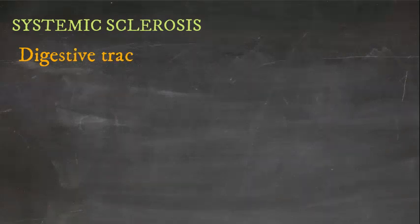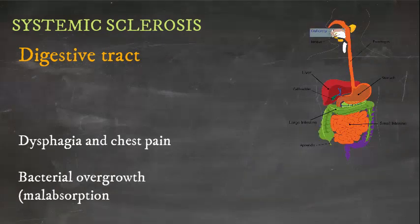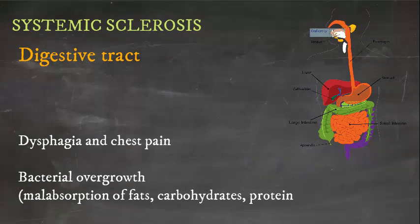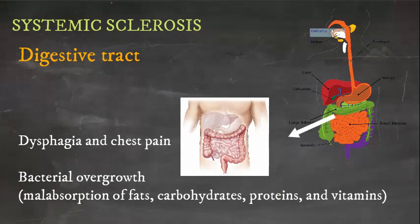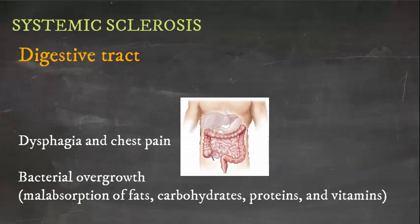In the digestive tract, there may be decreased motility in the esophagus and the lower esophageal sphincter, leading to dysphagia and chest pain. Small intestine involvement leads to bacterial overgrowth, and consequently patients suffer from malabsorption of fats, carbohydrates, proteins, and vitamins.